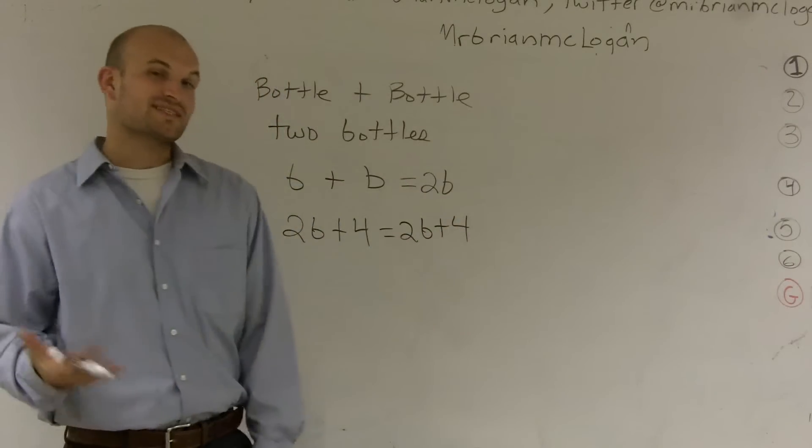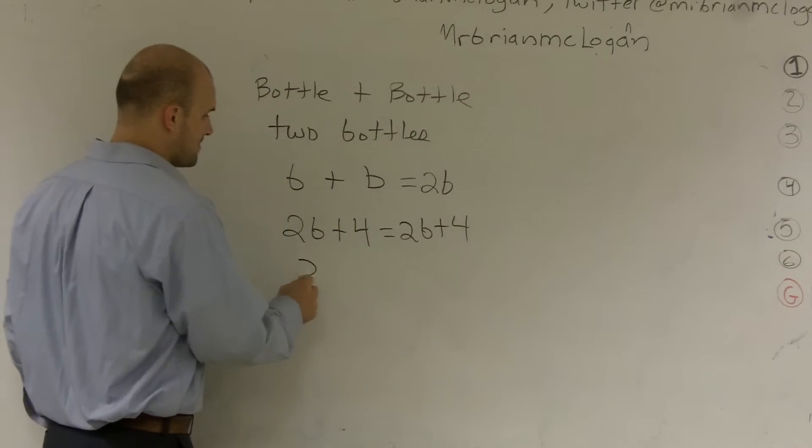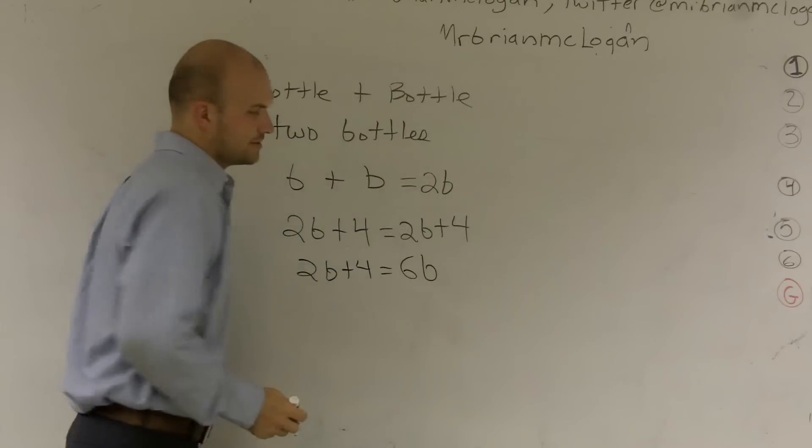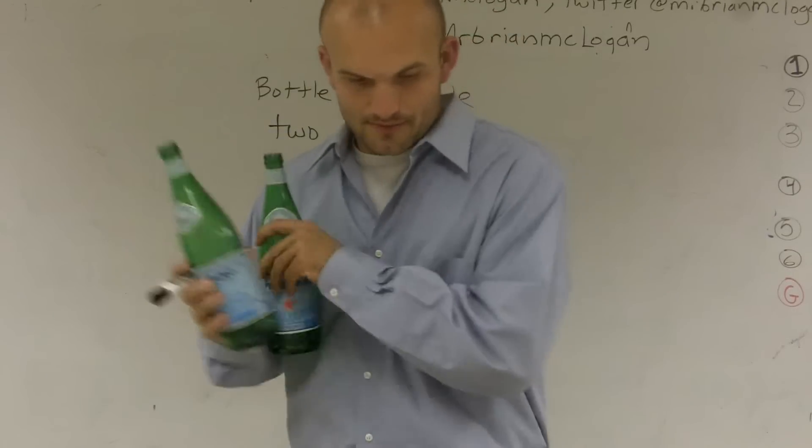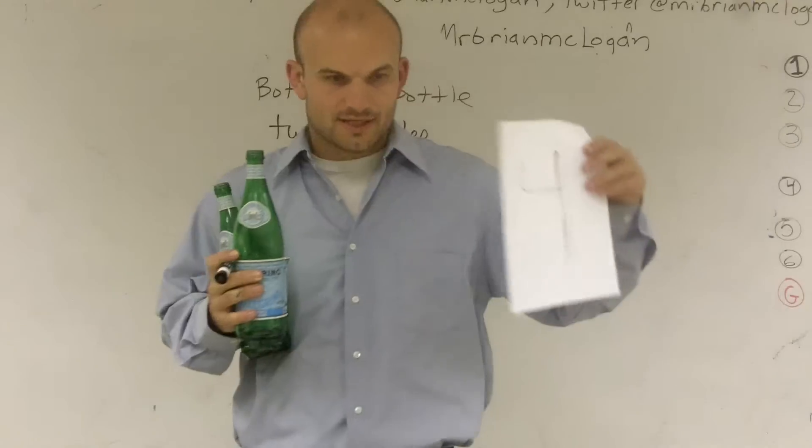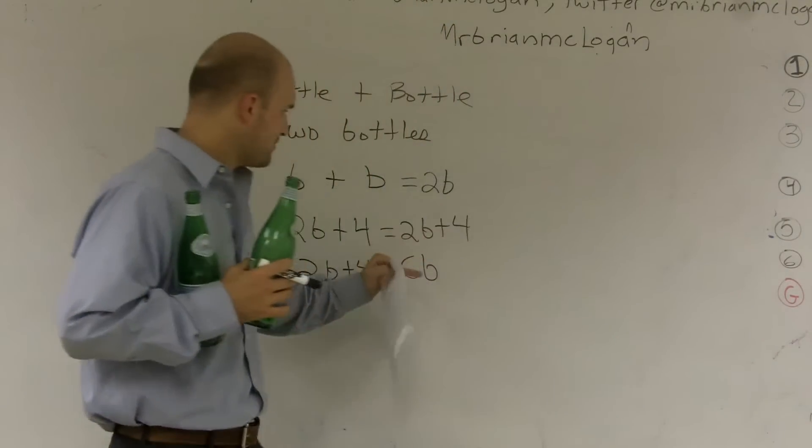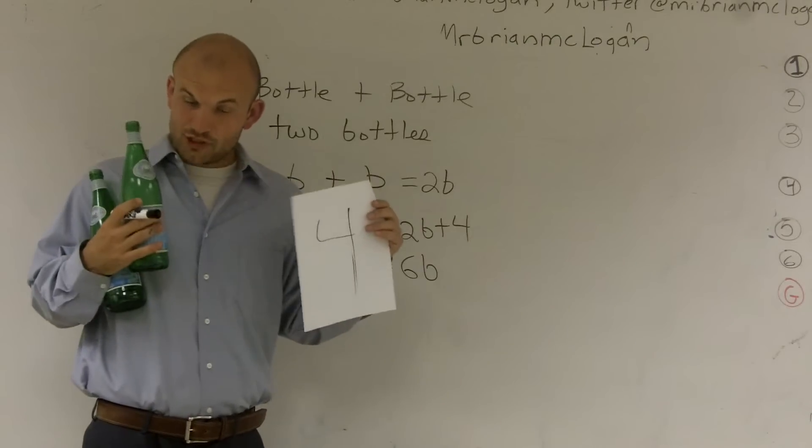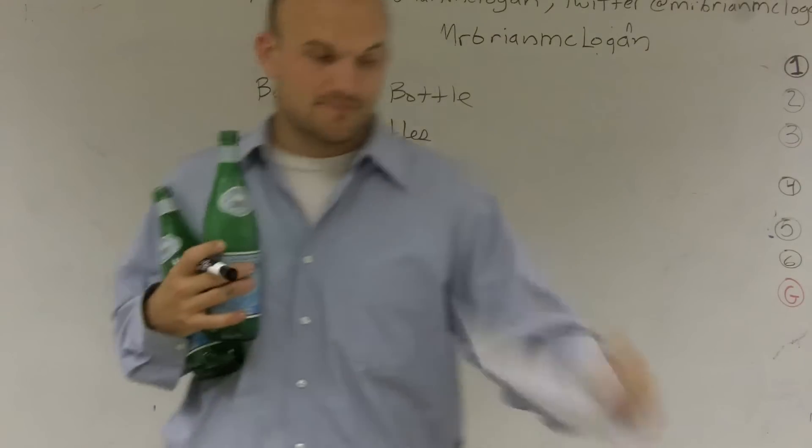Now, let's go through the mistakes that a lot of students like to make. A lot of times they say 2b plus 4 equals 6b. So please tell me if I have two bottles plus the number 4, where do I get six bottles? Because remember, b represents bottles. So that's telling me I have six bottles. I don't see six bottles here. I see two bottles and the number 4. So they're not the same, so you can't combine them.